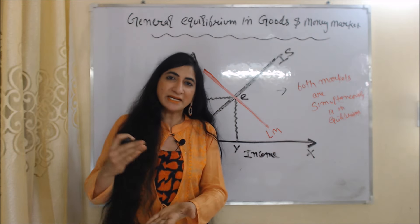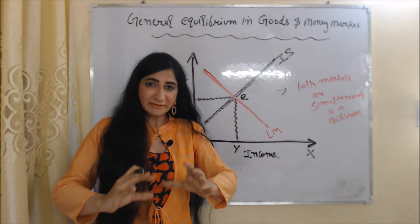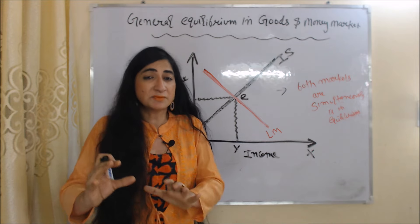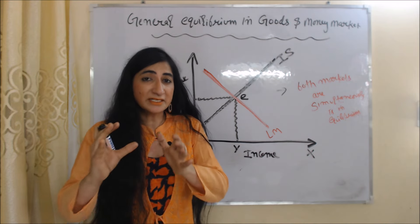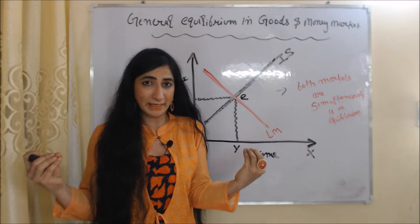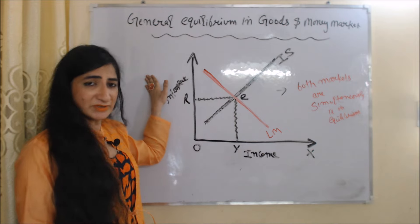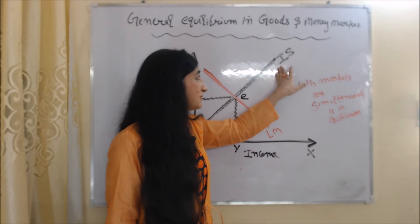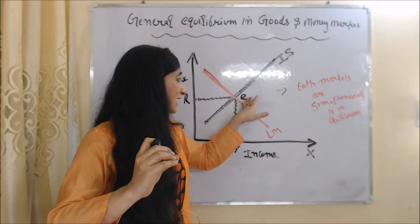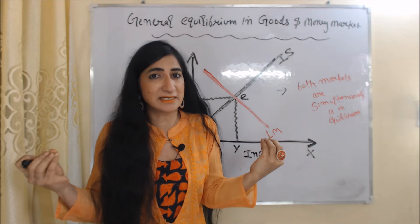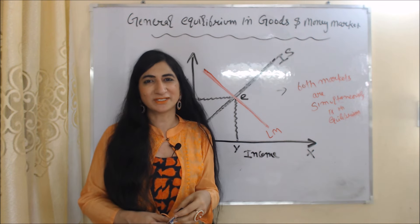Now we are going to talk about general equilibrium in the goods market and money market. IS tells us about equilibrium in the goods market and LM tells us about equilibrium in the money market. When the IS curve and LM curve intersect each other, they simultaneously determine equilibrium in both markets. In this diagram, the X axis has income and Y axis has interest rate. The red curve is LM and the black curve is IS. At point E, IS and LM intersect each other, so both markets are simultaneously in equilibrium. This is all about the IS-LM model. Thank you so much for watching this video.